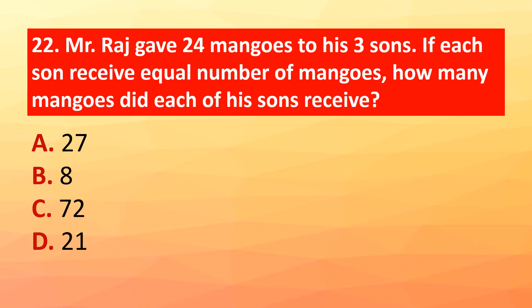Question 22: Mr. Raj gives 24 mangoes to his three sons. If each son receives an equal number of mangoes, how many mangoes did each son receive? The correct answer is option B: 8.